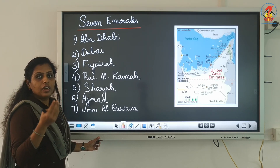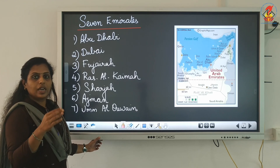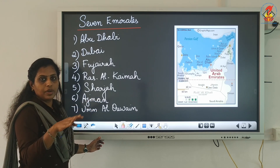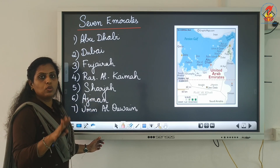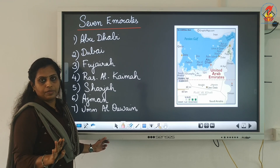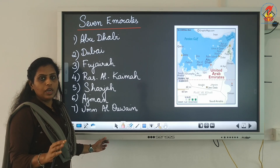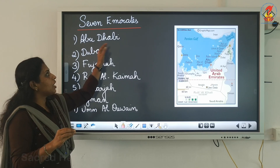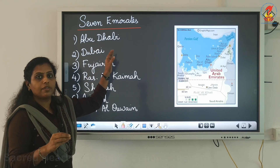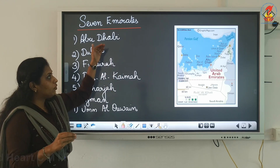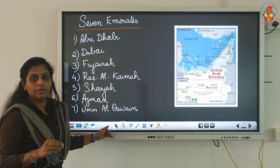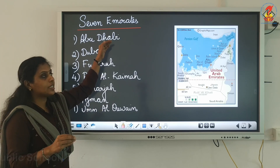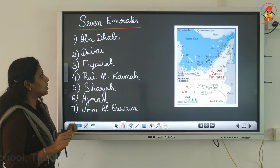Just like we have states in our country, in UAE an area is ruled by an Amir — and there are seven such emirates, each with their own Amir, so seven Amirs rule seven different emirates.